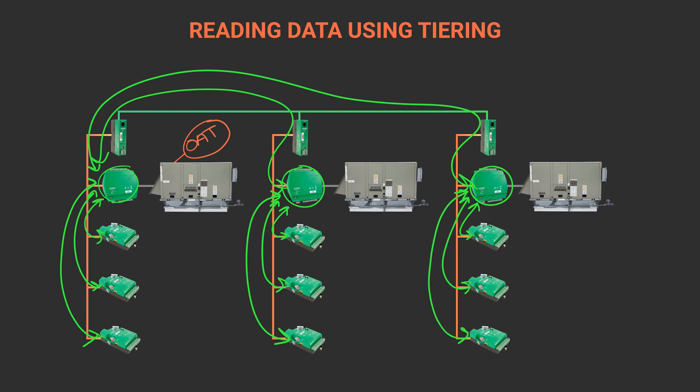Point passing in BACnet networks can seem difficult at first, but practice and using these strategies will increase your overall network efficiency and reduce your troubleshooting times. For more information on ControlBasic and point passing, check out the other videos in this series. Or to learn more about any of the solutions from the Building Geniuses at KMC, visit us on the web at kmccontrols.com.